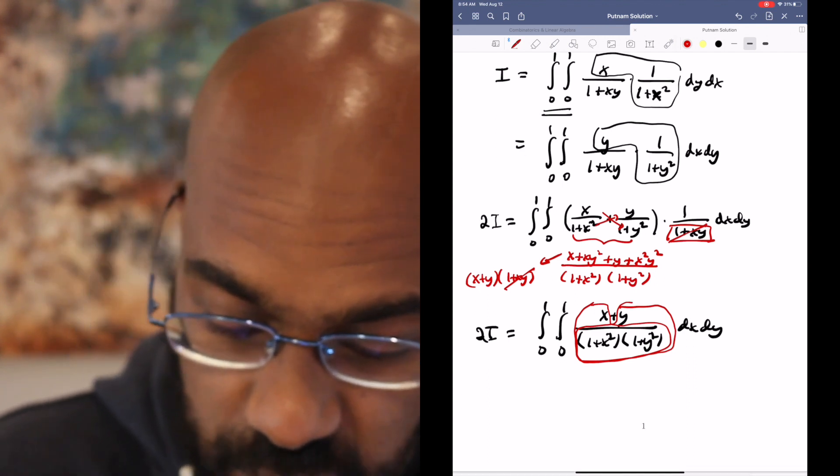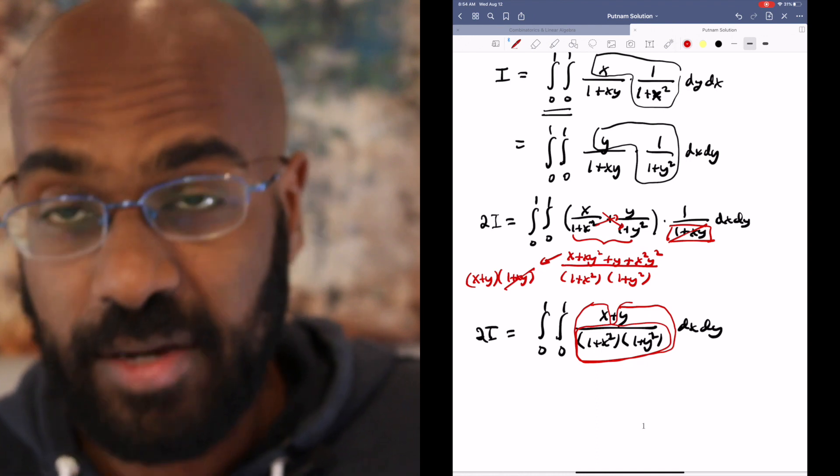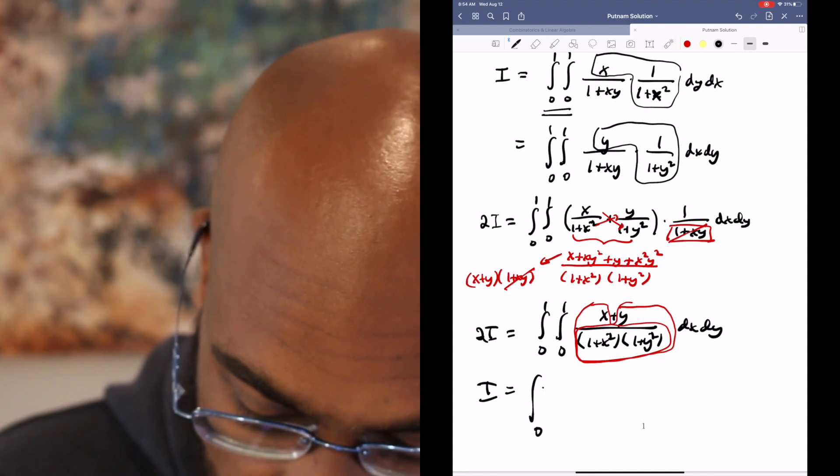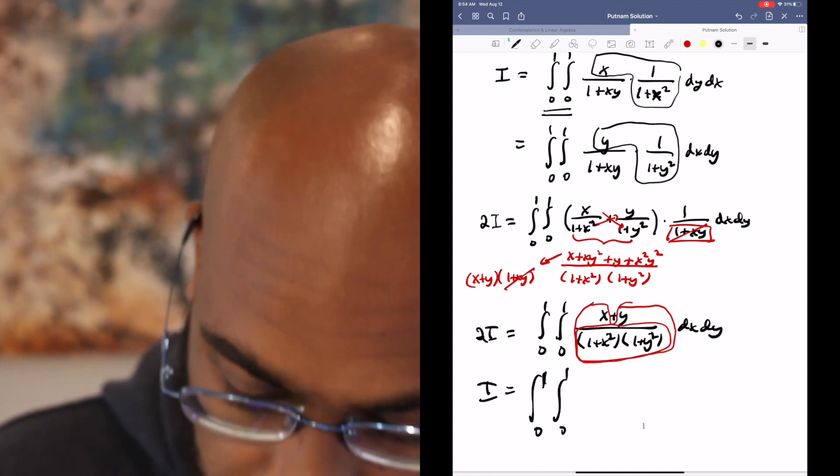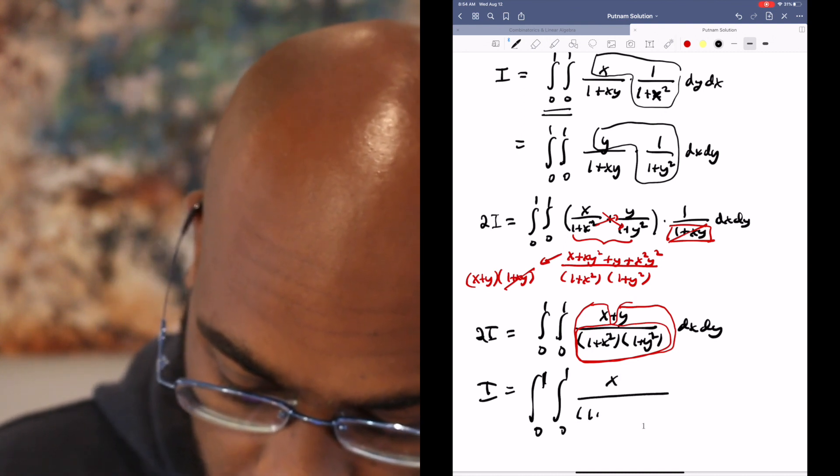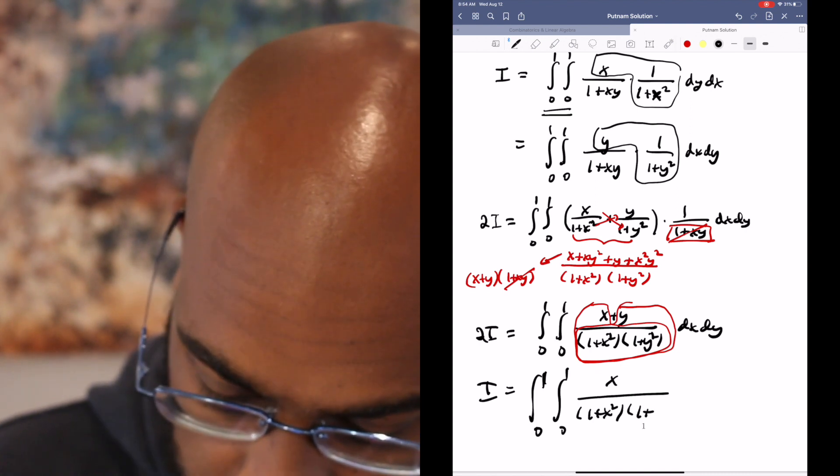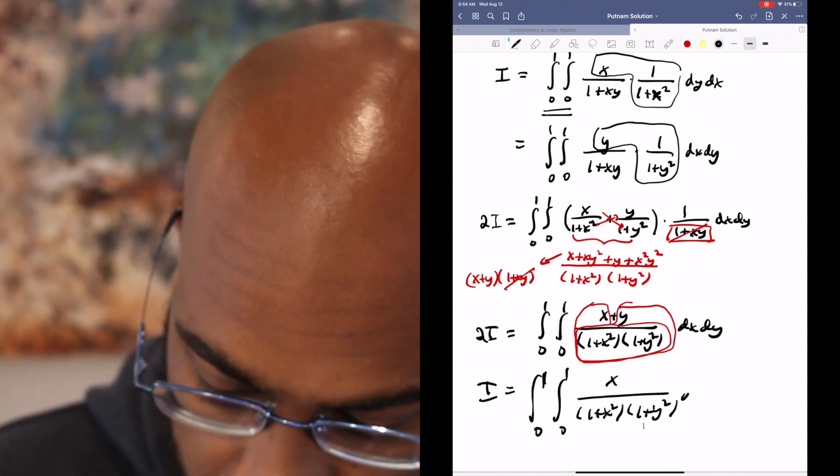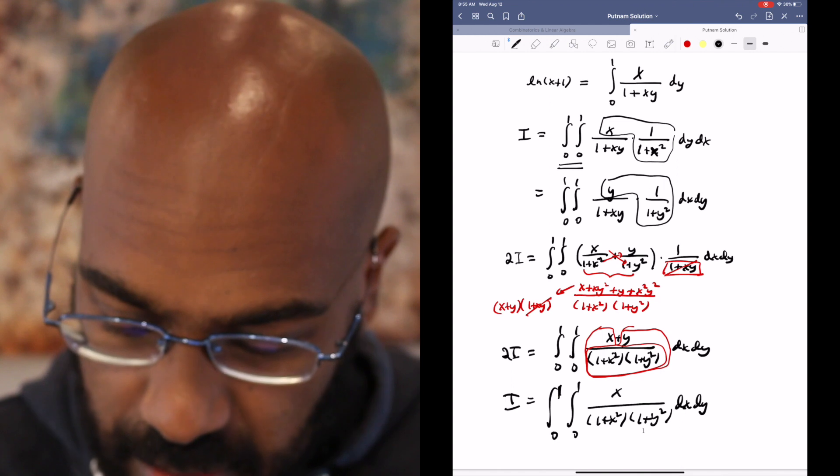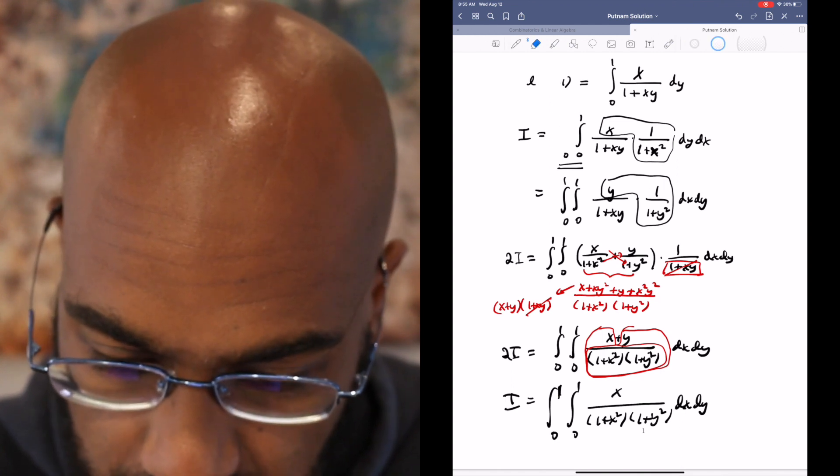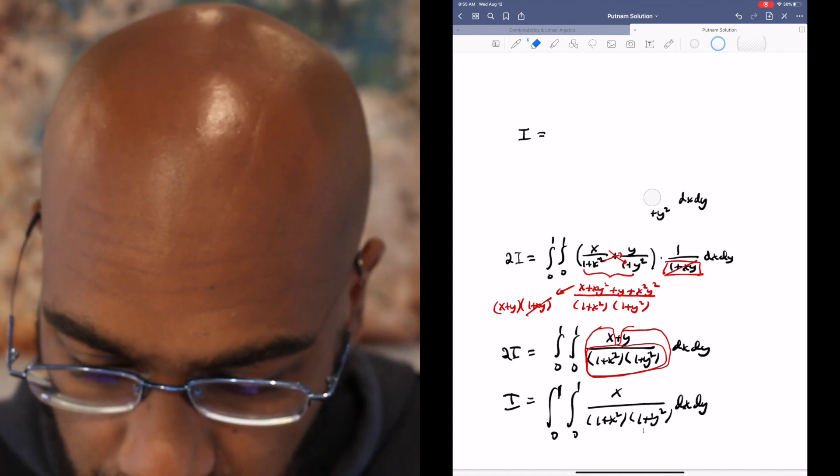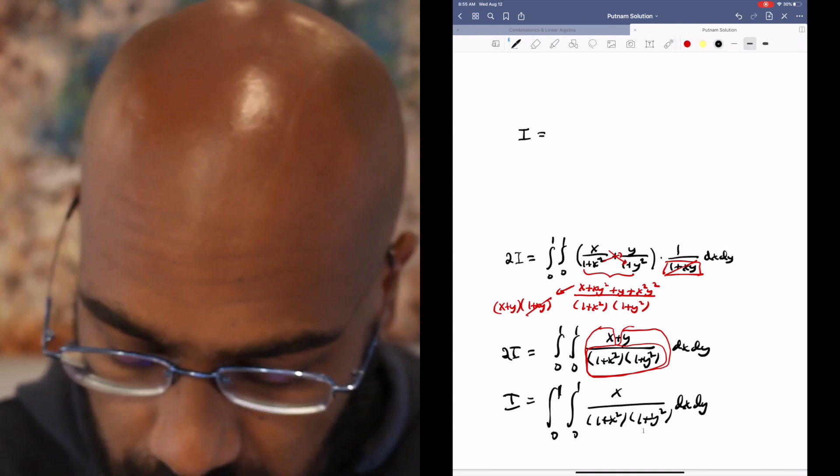So if twice the integral is the integral of this sum, then one copy of the integral can be achieved by eliminating one of these summands. So we get something like x over 1 plus x squared times 1 plus y squared dx dy. Now we're in a very interesting situation. To make room for space here, I'm going to erase what we had over here and continue writing the integral that we have here.